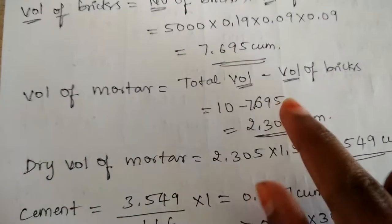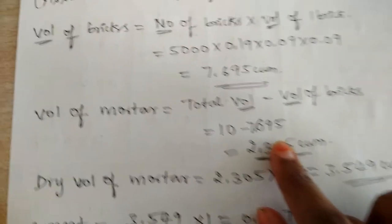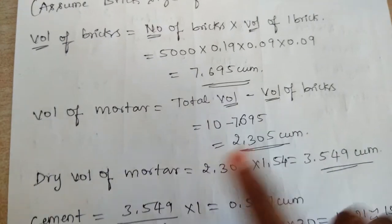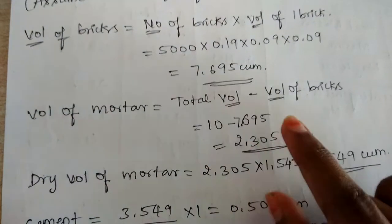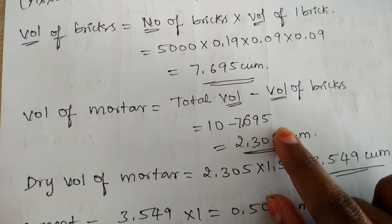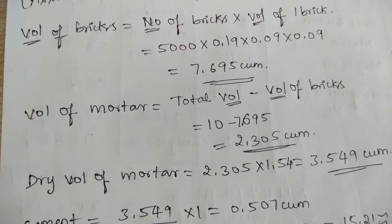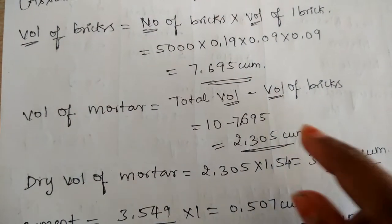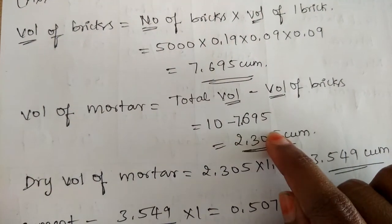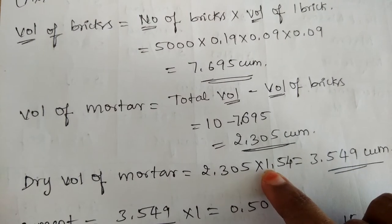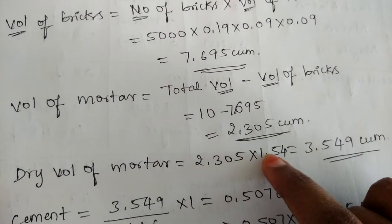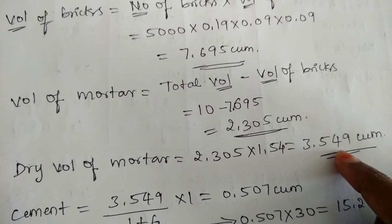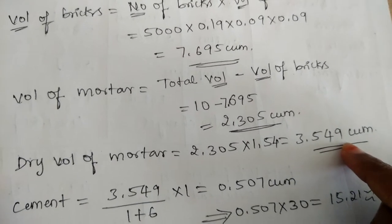This gives you the wet volume of mortar, but we need to find the dry volume. The dry volume will always be 1.54 times greater than the wet volume. So we multiply the wet volume with 1.54. On multiplying, we get 3.549 cubic meter, which is the dry volume of mortar.